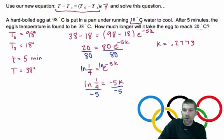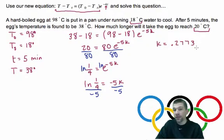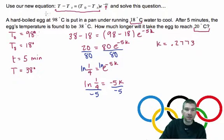And now what I'm going to do is I'm going to take this and substitute it back into this equation because now I want to know how long will it take the egg to get to 20 degrees Celsius. So, all of these numbers change now. Not all of them. So, my original temperature is 98. The temperature of the surrounding is 18. Time is now something I don't know. But my final temperature now is going to be 20. And we discovered K is going to be .2773.